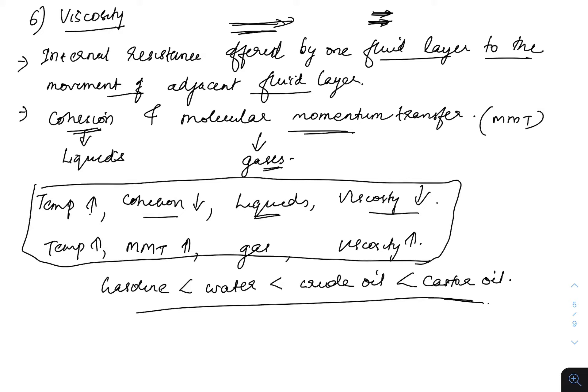As temperature increases in liquids, the attraction between particles — cohesion — reduces, so viscosity decreases. But in gases, molecular momentum transfer is important. When temperature increases, gas molecules collide more, so molecular momentum transfer increases and viscosity increases. For increasing order of viscosity: gasoline is less viscous than water, which is less viscous than crude oil, and castor oil has the most viscosity among these four.